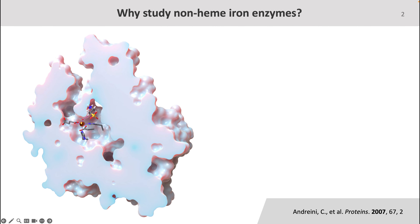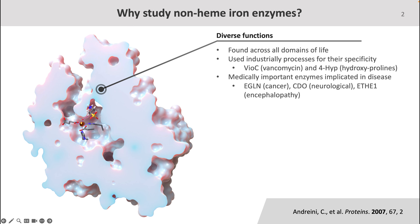Before we talk more about the distinguishing features, I wanted to provide some background as to why it's essential to study non-heme iron enzymes in the first place. Non-heme iron enzymes are found across all domains of life, meaning that what we learn from studying a given non-heme iron enzyme can be translated to research and applications in another species. Second, non-heme iron enzymes are already used in a number of key industrial processes. For example, the hydroxylase VOC is used in the biosynthesis of a potent antibacterial drug called vancomycin, and the hydroxylase 4-HIP is used in the synthesis of hydroxyprolines, which are used in the food and cosmetic industries.